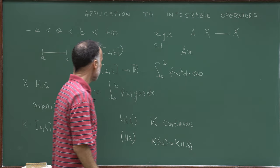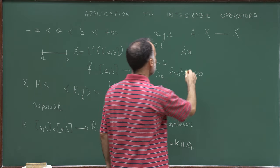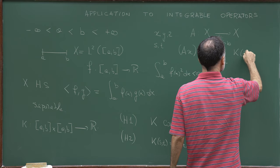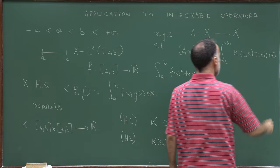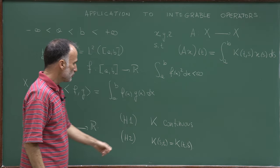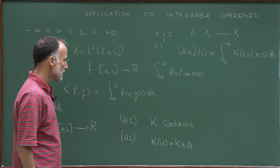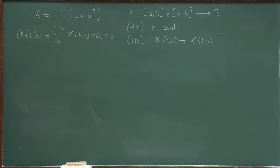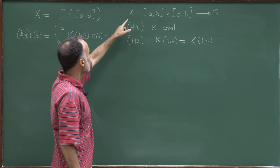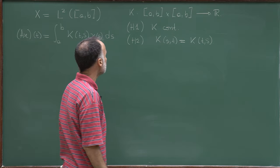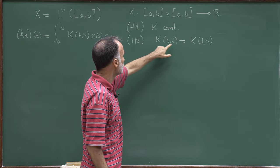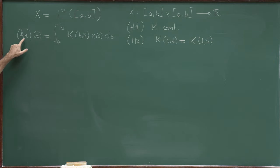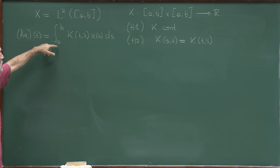The operator A maps x to a function in L2, whose value at t is given by the integral from a to b of k(t,s) x(s) ds. I will always assume hypothesis H1 (continuity of k) and sometimes H2 (symmetry), and my first task is to derive some properties of this operator A. So: X is L2(a,b), k is a kernel on (a,b)×(a,b) taking values in ℝ; H1 requires k continuous, H2 requires k symmetric.